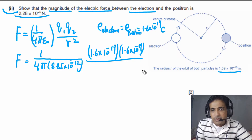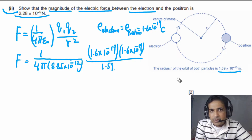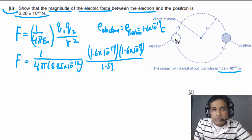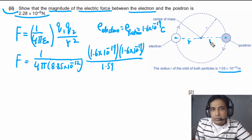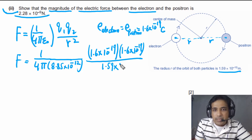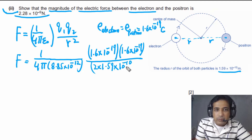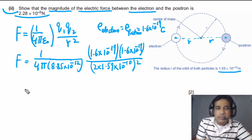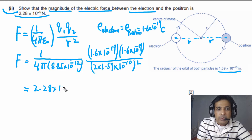The separation between these two charges is important: the radius of the orbit is given as 1.59 × 10⁻¹⁰ m, but we need the separation between the centers of the two charges, which equals 2R. So the separation is 2 × 1.59 × 10⁻¹⁰ m, and we take the square of this value. Solving this, our final answer is F = 2.28 × 10⁻⁹ N (to 3 significant figures).